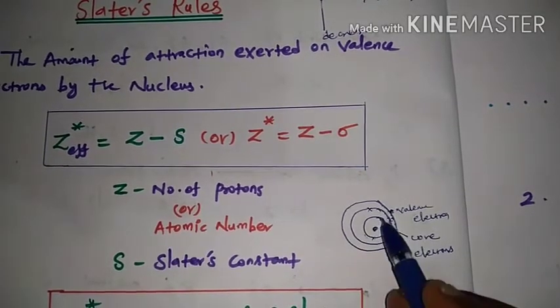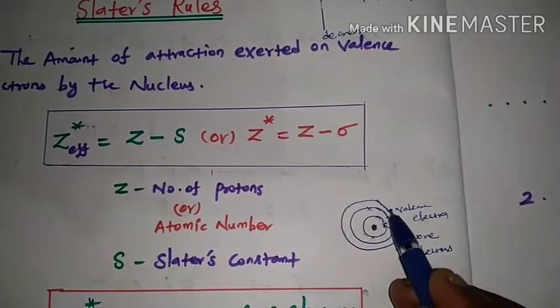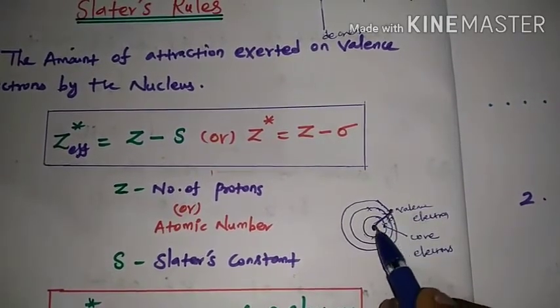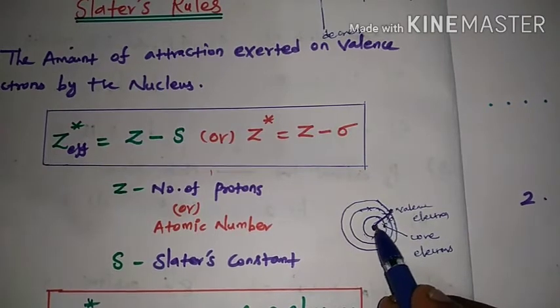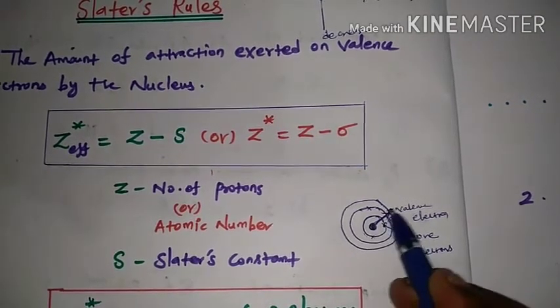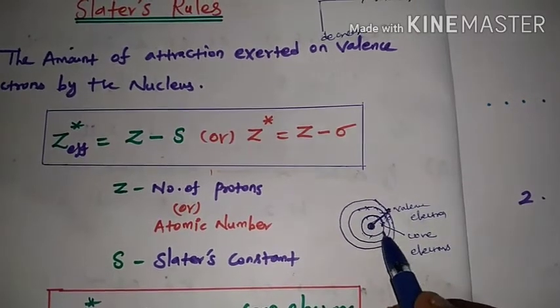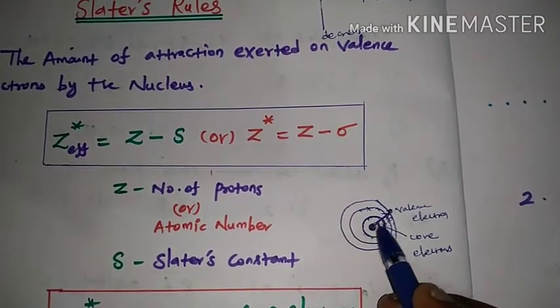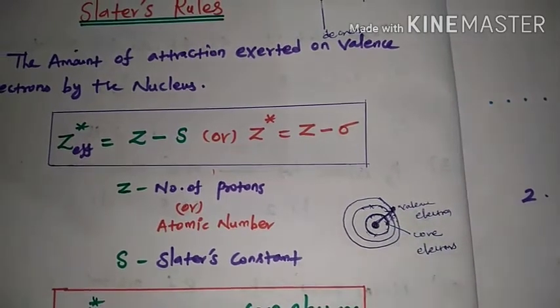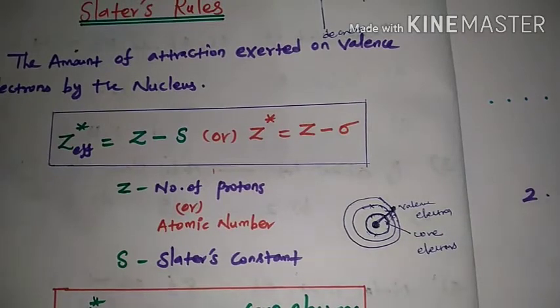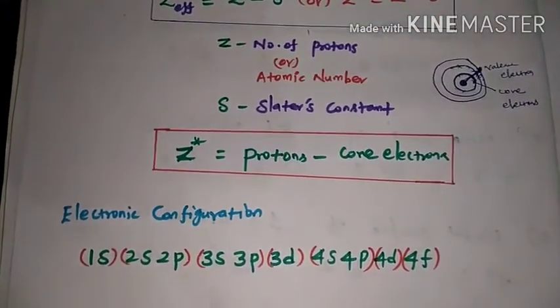As the shell increases, the effective nuclear charge decreases, and the size of the atom increases. This is because the concentration of nuclear influence decreases with distance. The innermost shell electrons experience the highest nuclear charge.